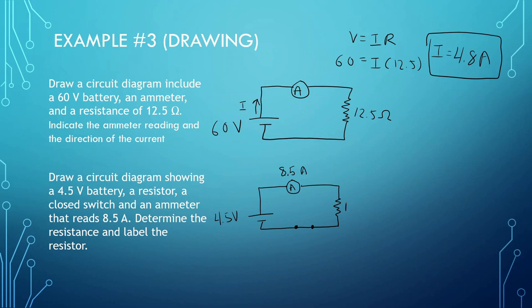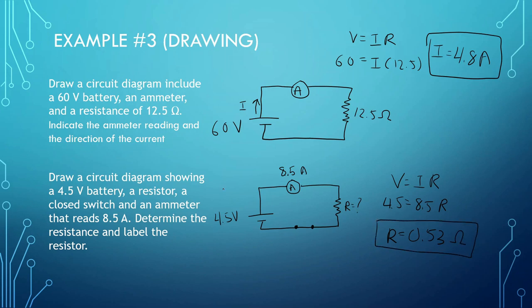We want to know what this resistance is equal to. So we do V equals IR. We know the voltage is 4.5, we know the current is 8.5 — the ammeter told us that — and now we have to find the resistance. So we're going to do 4.5 divided by 8.5, and we get a resistance of 0.53 ohms. And that's how we do the drawing — this is important for the rest of the chapter, as you're going to be drawing a lot of circuits like this.